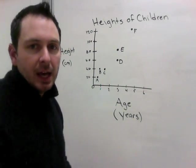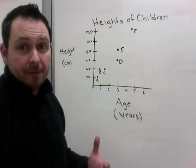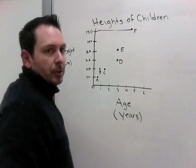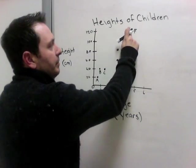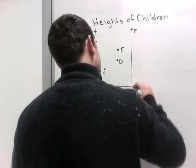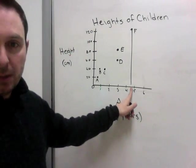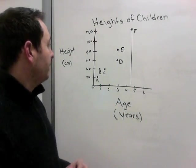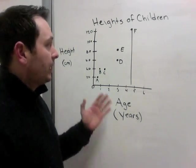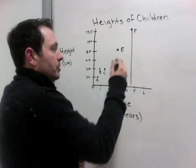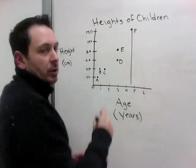Another question might be, how tall is person F? So person F, find person F, go across. Person F is 120 centimeters tall. How old is person F? Person F is approximately 4 1⁄2, maybe a little more than 4 1⁄2 years old. So that's how we can read these graphs when they have the dots, which are a little different than when they're all connected.